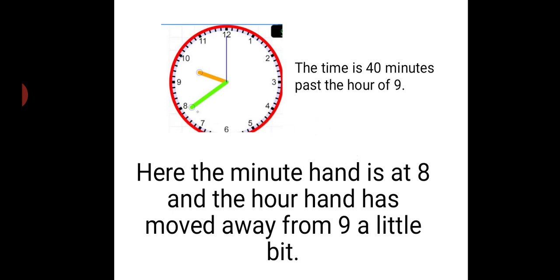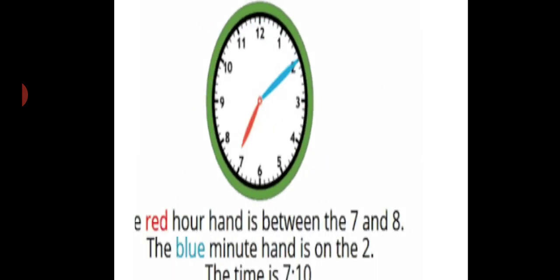Now let's look at this. Here we can see that the minute hand is almost at 8, and then the hour hand has drifted from 9 and is moving to 10. It has passed 9. So here we say that the time is 40 minutes past the hour of 9.